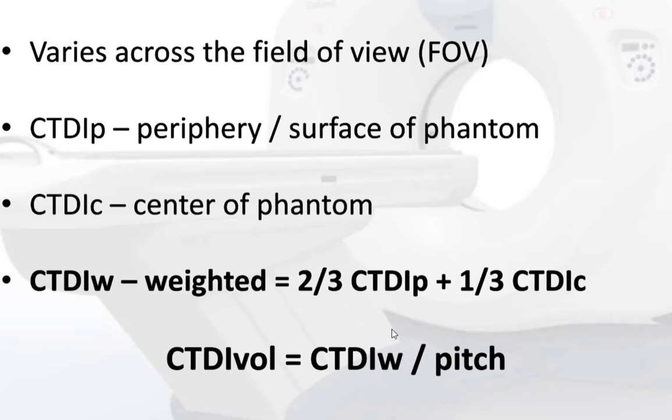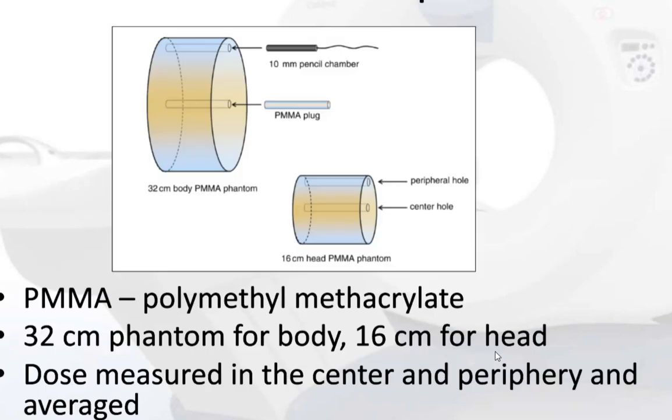The formula for CTDI volume is CTDI-W over pitch, and we will talk about pitch soon.